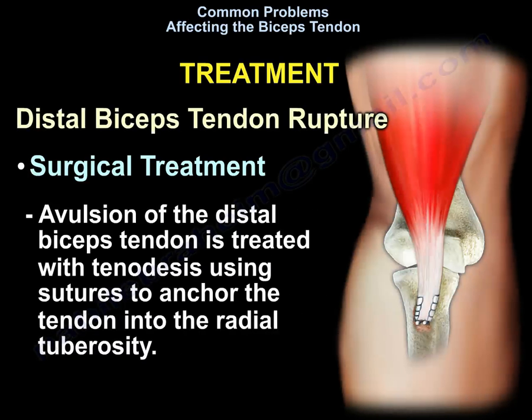For distal biceps tendon rupture, treatment is usually surgical. Avulsion of the distal biceps tendon is treated with tenodesis, using sutures to anchor the tendon into the radial tuberosity.